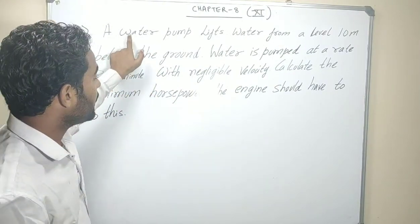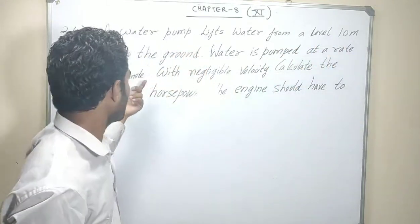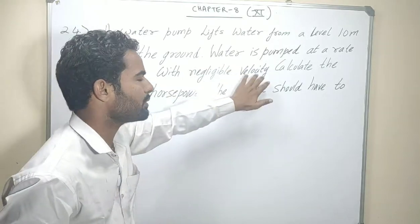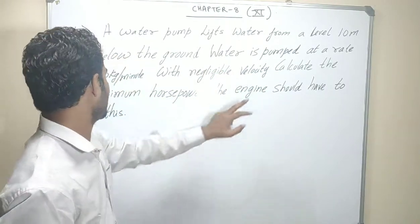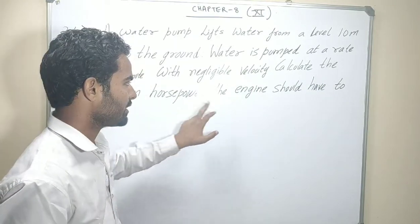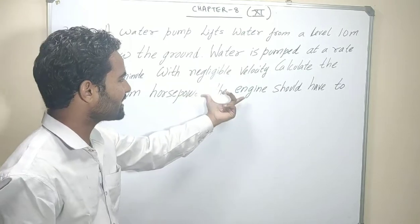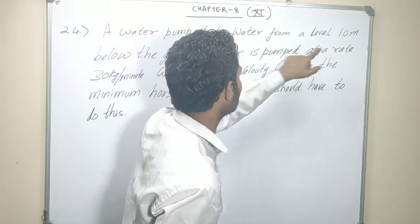Question kya hai? A water pump lifts water from a level 10 meter deep below the ground. Water is pumped at a rate of 30 kg per minute with negligible velocity. Negligible velocity matlab, yaha pe kinetic energy ka koi role nahi hai. Calculate the minimum horsepower the engine should have to do this.